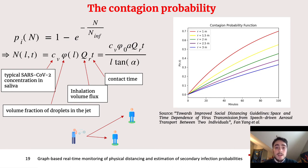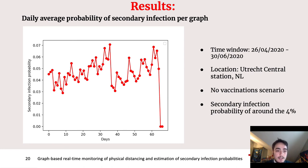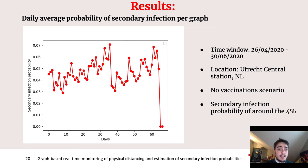By putting everything together, we can get an estimate on the average probability to have a secondary infection. In this plot, we have our result, where the x-axis represents time in chronological order from the end of April to the end of June 2020, and each point represents a day. On the y-axis, we have the average daily probability of having an infection per graph. This corresponds basically to the average daily probability of having a secondary infection in the time window in which a train approaches the platform of Utrecht Central Station in the Netherlands. We obtain a result of a 4% probability to have a secondary infection.